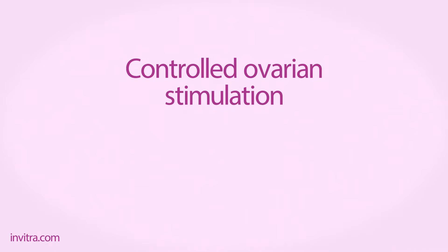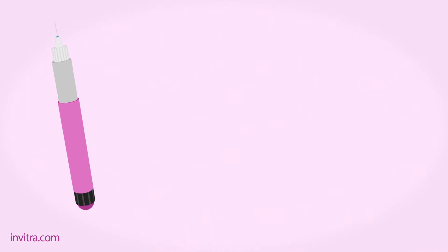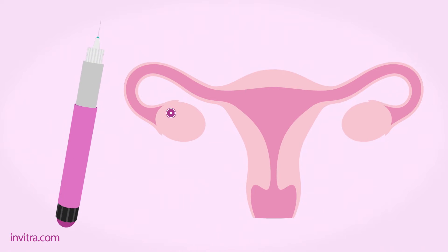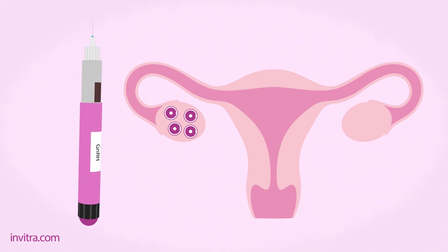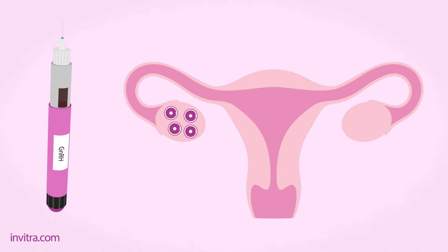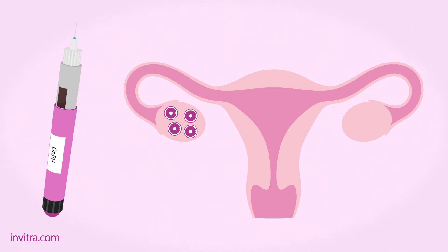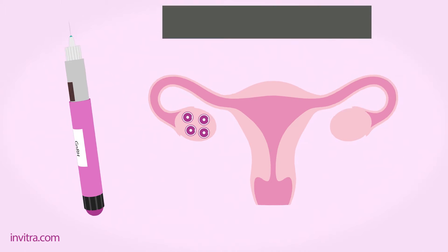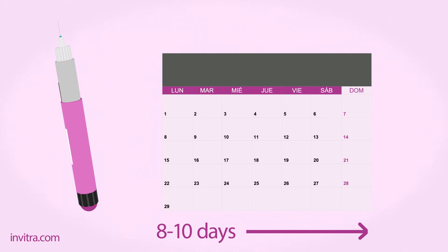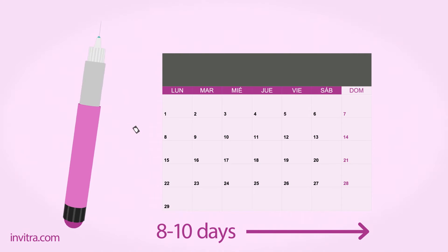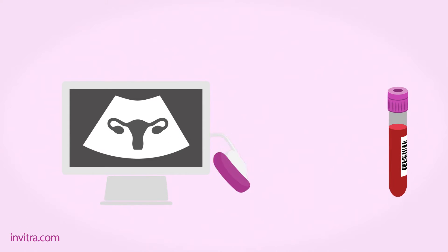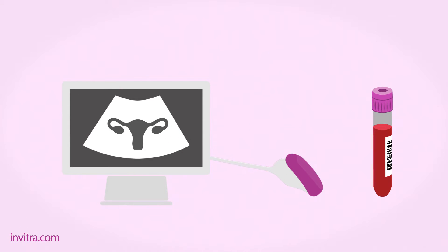Step 1: Control ovarian stimulation. Fertility medications are injected intravenously to trigger egg production and maturation. This allows for ovulation to be controlled, thereby obtaining multiple eggs. It takes around 8 to 10 days. Throughout that period, the woman is monitored by ultrasound scan and blood test on a regular basis.